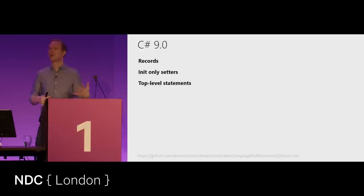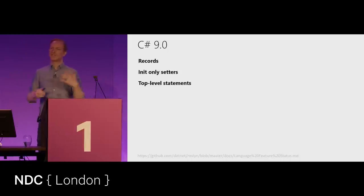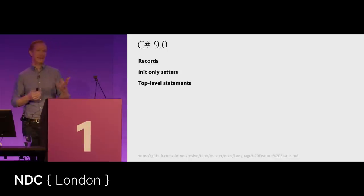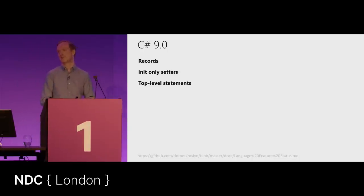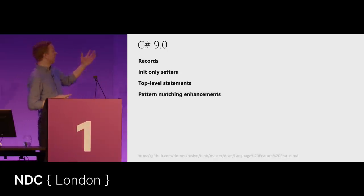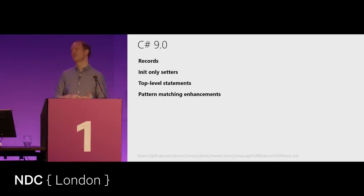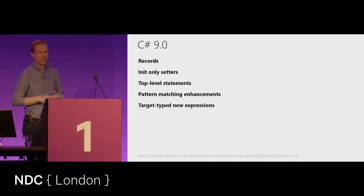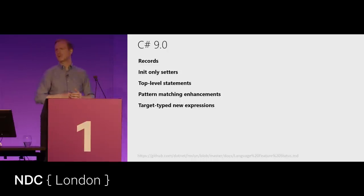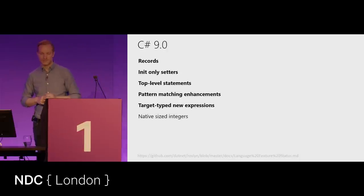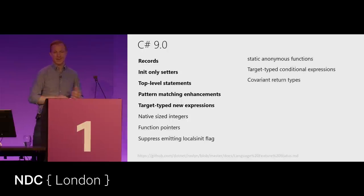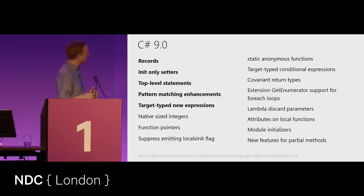Top-level statements aren't only for new developers getting into C#; they also make it easy to write minimal applications deployed as small Docker containers — very self-contained in a small file. C# 9 also brought pattern matching enhancements, target-type new expressions removing the need to explicitly define the type when creating an instance, and many more features. I want to emphasize: you don't have to use all of this. If you find yourself wondering if there's a smarter way to express a problem, there might be a language feature that helps.